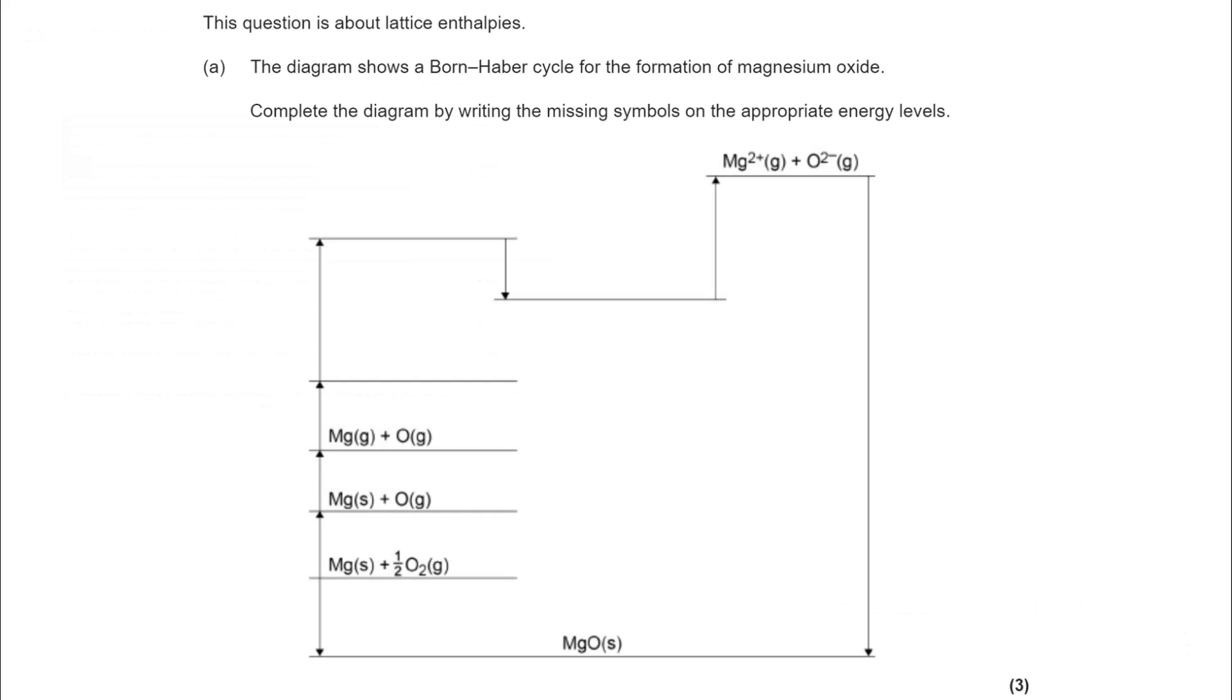Now, in terms of knowing what changes are going to happen, you can see we're going from Mg and O to Mg2+ and O2-. My first two endothermic processes are going to be the first ionization enthalpy of magnesium. I'm including state symbols. It's absolutely vital they are there to get the mark.